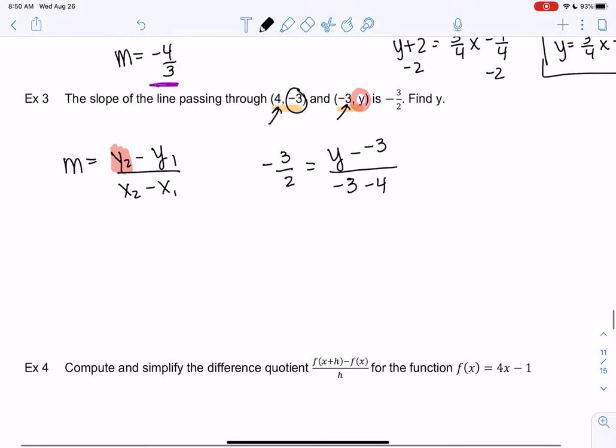The main thing is make sure your x1 and y1 go together: x1, y1, x2, y2. So let's see where this takes us. -3/2 equals (y + 3)/(-7). I can multiply by -7 to get rid of the denominator.